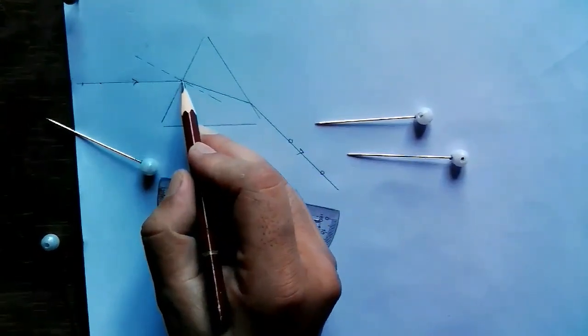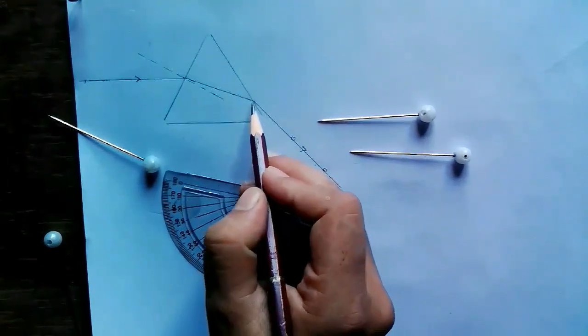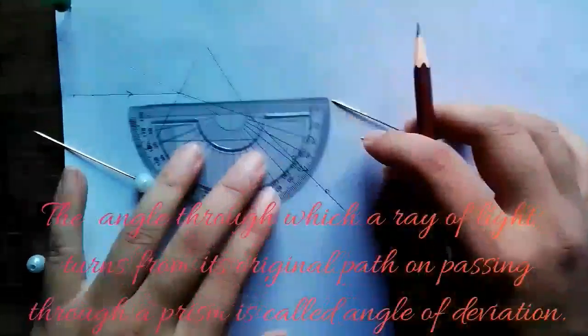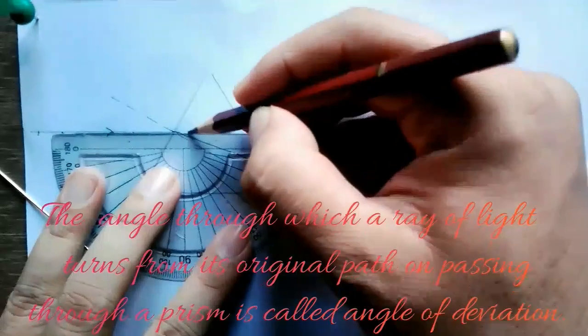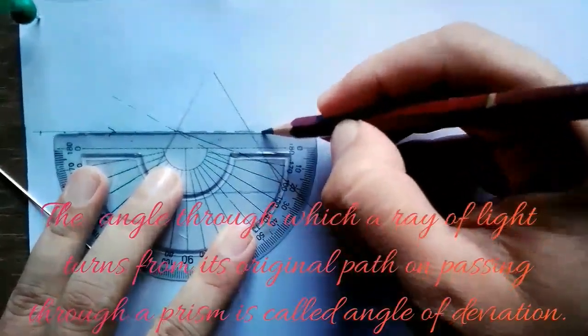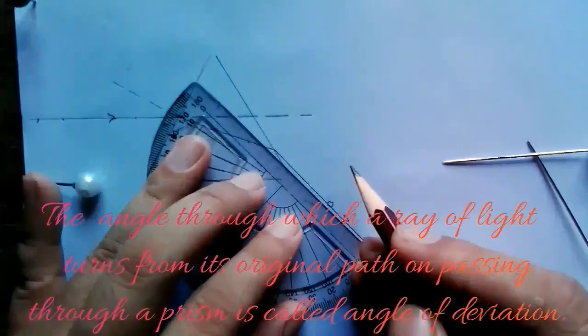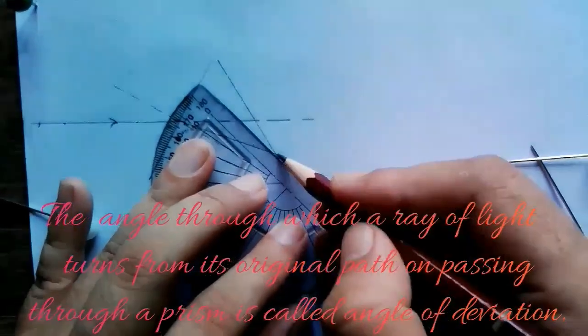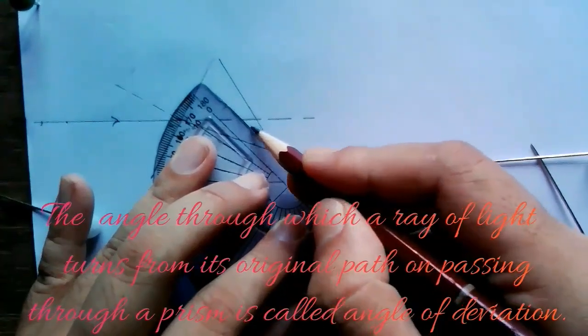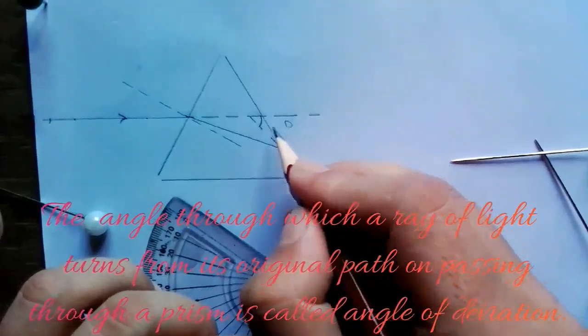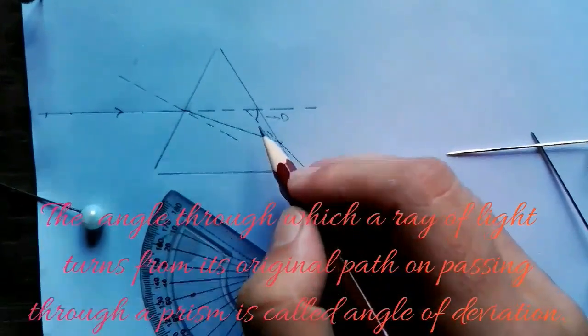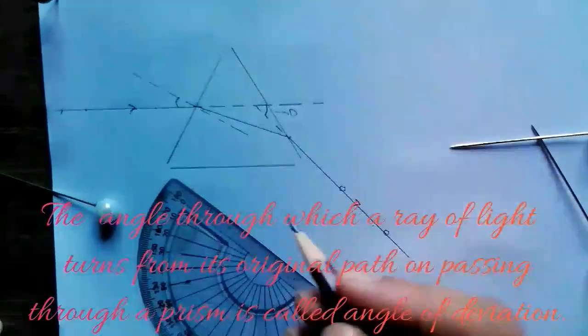Draw a straight line through the two points. The angle between the extended incident ray and the emergent ray is the angle of deviation, and this angle is the angle of incidence.